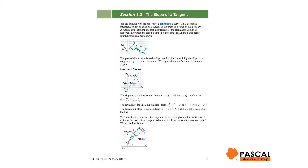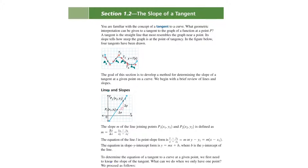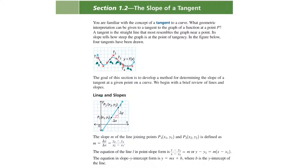This is CB4U1, Chapter 1, Session 5. In this session, we work on Section 1.2 from the textbook: The Slope of a Tangent Line.